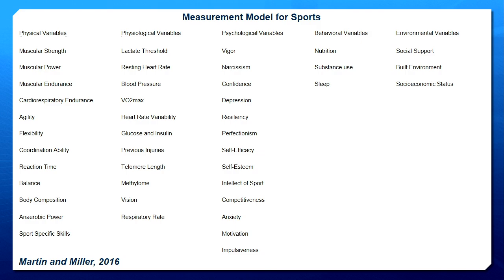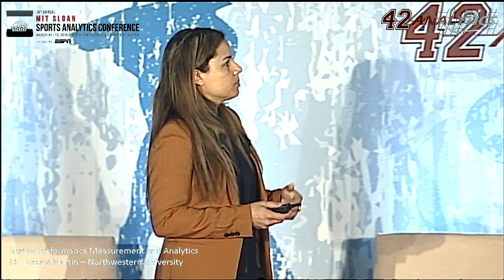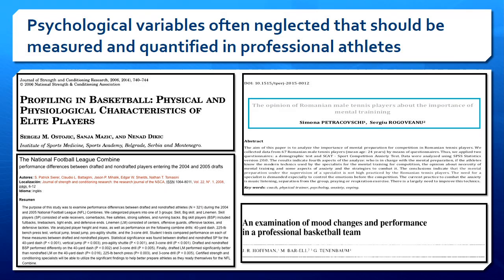As for physiological variables: lactate threshold, which is a good determinant of how much you can push the athlete before they start to reduce capacity due to high lactate buildup; resting heart rate; blood pressure; VO2 max; glucose and insulin for insulin sensitivity; previous injuries; telomere length and methylome — good indicators of biological aging. Psychological variables have often been neglected. They should be measured and quantified in professional athletes, and there is a significant gap that data scientists could fill.